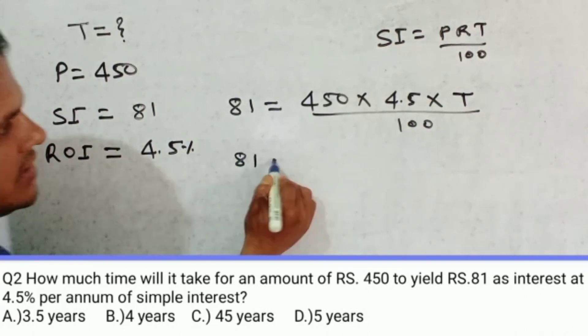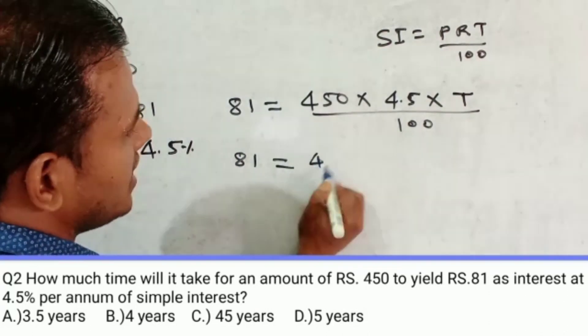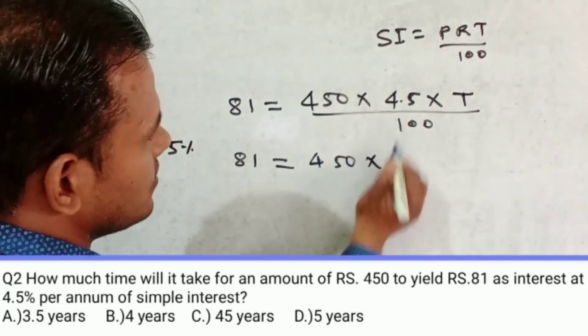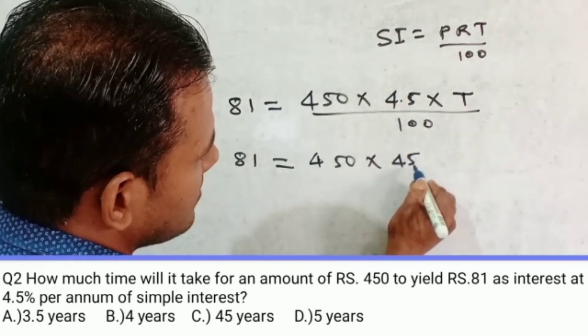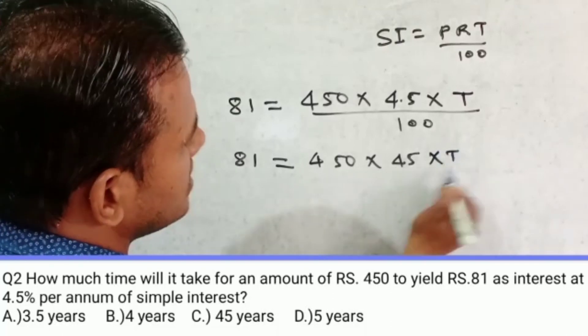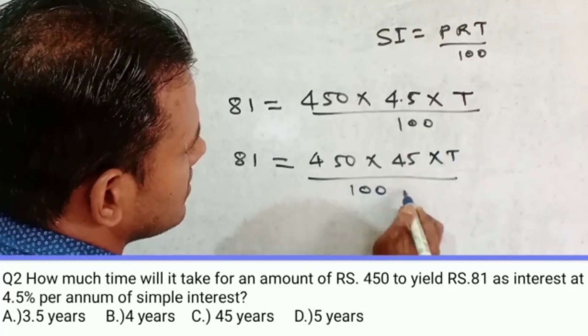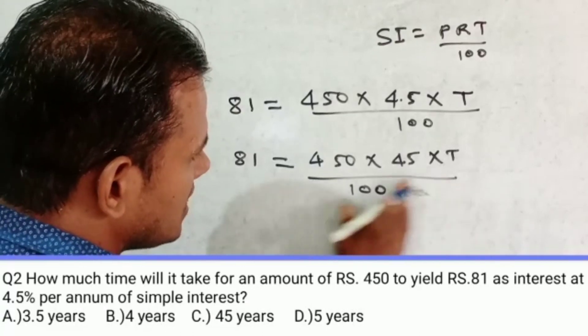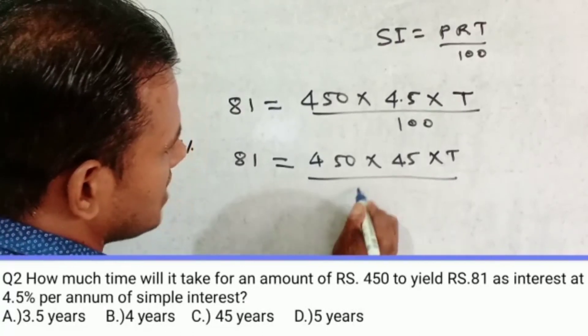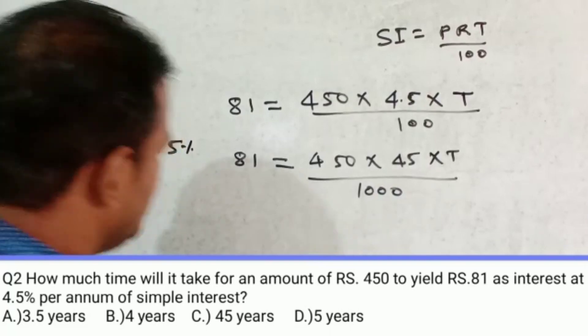So 81 is equal to 450. If I remove point here, so here will be 45 by 10 into T, 100 into if I remove point, so here will be 10. So total it is 1000.